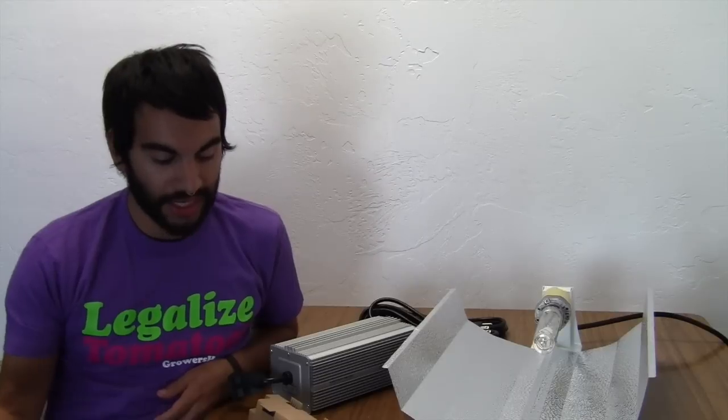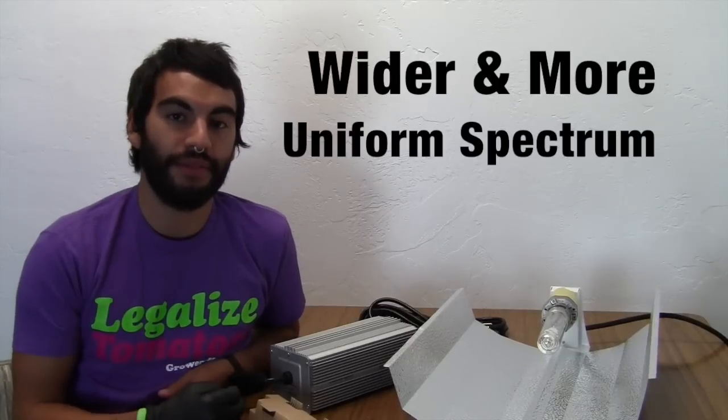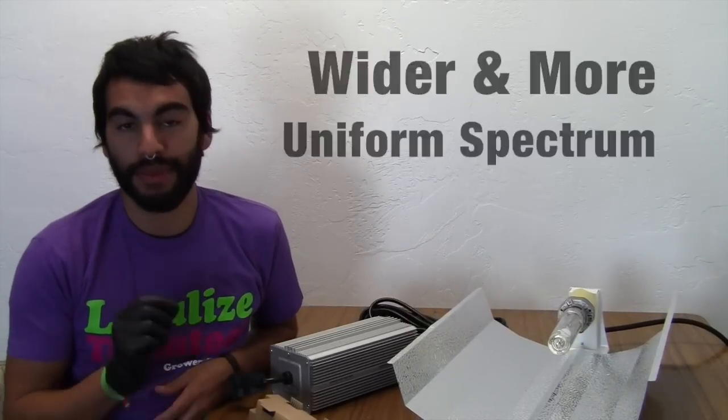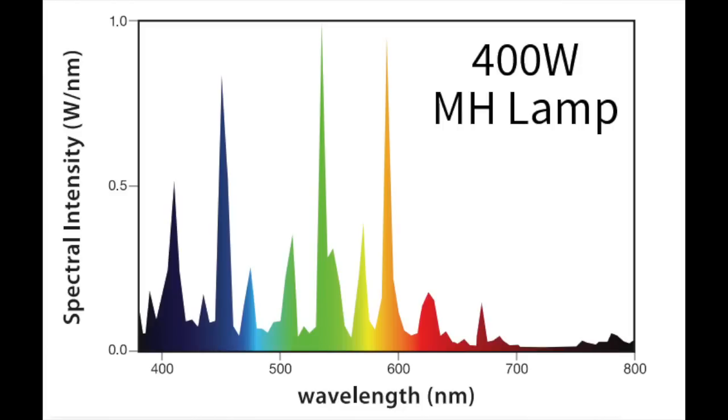And ceramic metal halide is gaining a lot more popularity because these ceramic metal halide 315 lights have a better, wider spectrum. And what I mean by better is they have a wider spectrum, like a more uniform spectrum than most traditional metal halide or HPS lights.